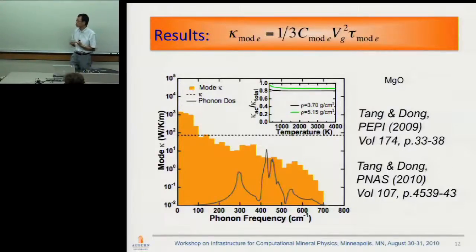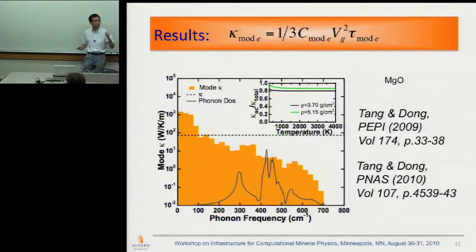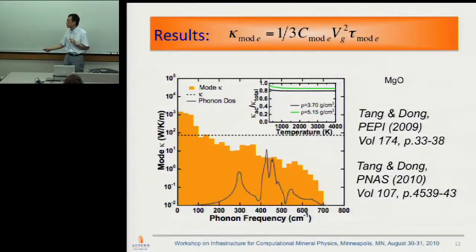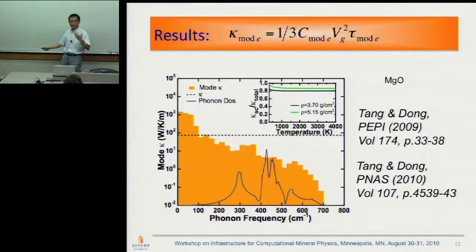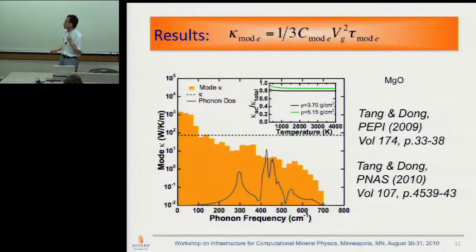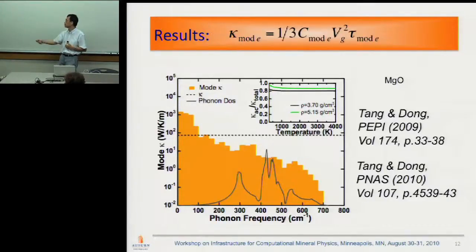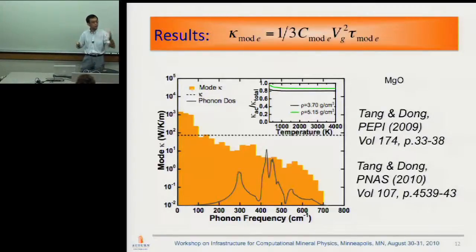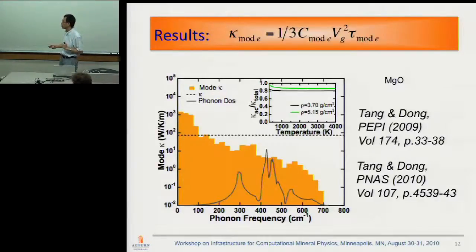Here's the result from our recent work on MgO. What I'm plotting is the contribution to conductivity from each individual phonon mode — this is on a log scale. The message here is that low-frequency acoustic modes are the main heat carriers. The analysis shows that acoustic modes contribute more than 80–90 percent of the conductivity. Optical modes are important and get involved in phonon scattering, but because they have relatively low group velocity, they don't contribute that much.